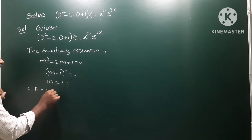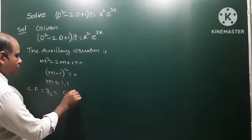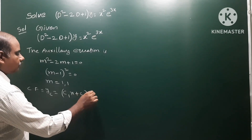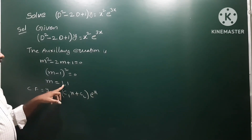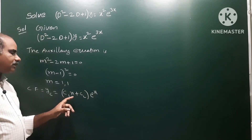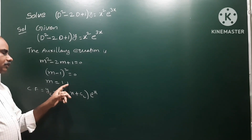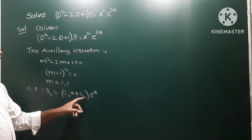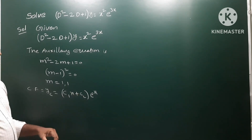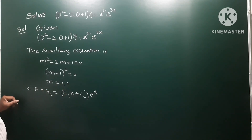Since m = 1, 1 are two equal roots, the complementary function yc is equal to (c1 + c2·x)·e^x. This is the complementary function.